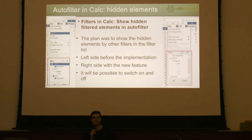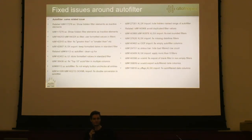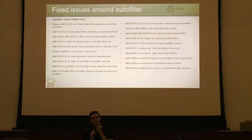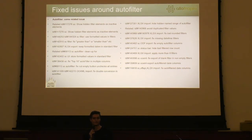In the future, maybe this feature will be able to be turned on or off, but that's not implemented yet. There are also some related bugs which had been fixed by improving the autofilter area. Also, I could present other things like the issue when counting the number of autofiltered records doesn't work in the status bar — there were wrong results at the bottom of the sidebar. That's also working now.